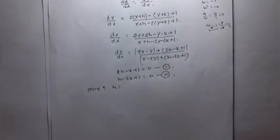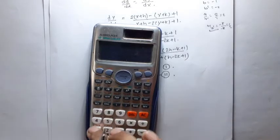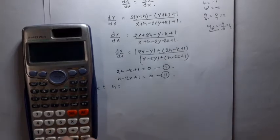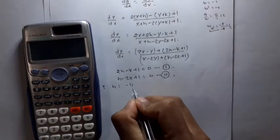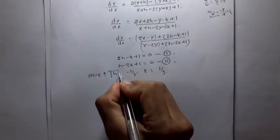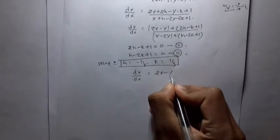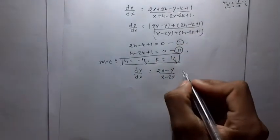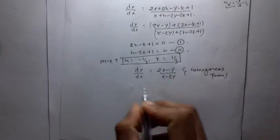Solving for h and k: from the two equations, using Cramer's rule or elimination, we get h = -1/3 and k = 1/3. With these values, the equation reduces to the homogeneous form dy/dx = (2X - Y)/(X - 2Y), which is purely homogeneous of degree zero.